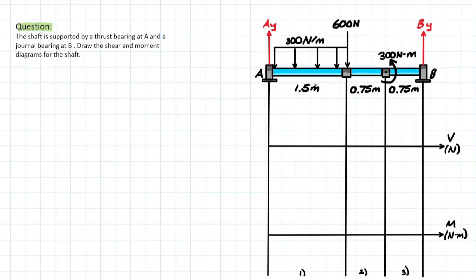But why is this a problem? It's a problem because we do not want to make our lives miserable taking three different sections for this shear moment diagram. Because what was the rule? Every time there is a new load introduced or removed, we have to create a new section. So there would be one section here, one section here, and one section here. So we know that if there are multiple loads, the section method will be tedious. So we introduce relationships between the loading and shear, and shear and moment, so that we can simply solve these problems.